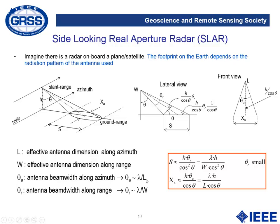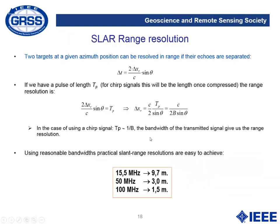For large antennas, there is an approximation that allows us to derive the beamwidth as a function of the physical dimension of the antenna — larger antennas are more directive. Using basic trigonometry and the incidence angle, it is easy to obtain the footprint dimensions. In range, two targets can be resolved if their echoes are separated by the appropriate expression. The larger the bandwidth of the transmitted signals, the better the range resolution. For instance, transmitting 15 MHz we achieve resolution of 10 meters; transmitting 100 MHz we can achieve 1.5 meters resolution.